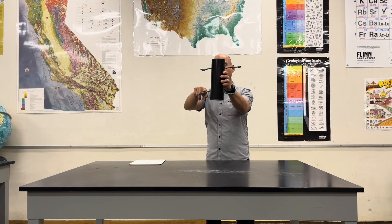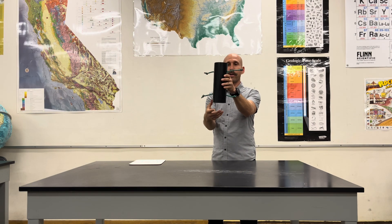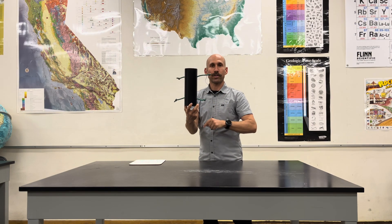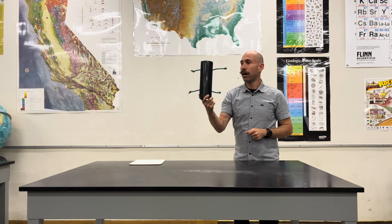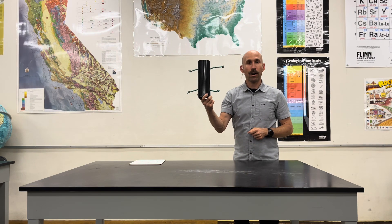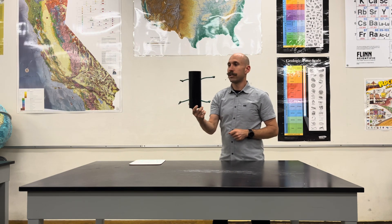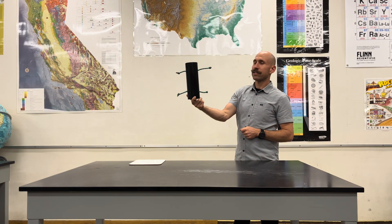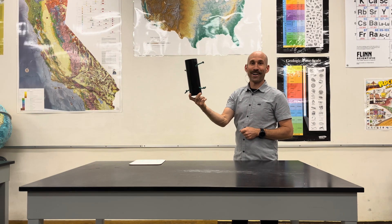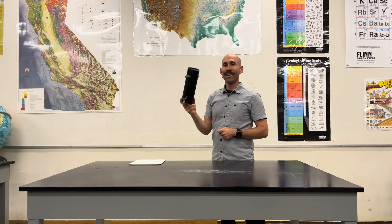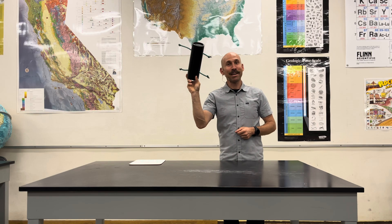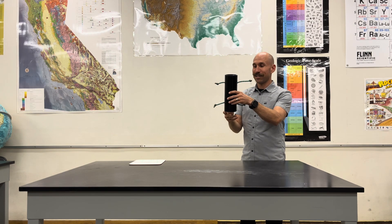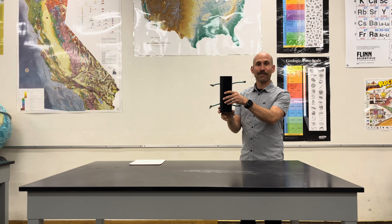There are four pieces of rope coming out of four different holes. These are objective observations. A subjective observation would be 'this thing is stupid,' or 'this thing is amazing' — but that's not science. That is not something that is falsifiable.